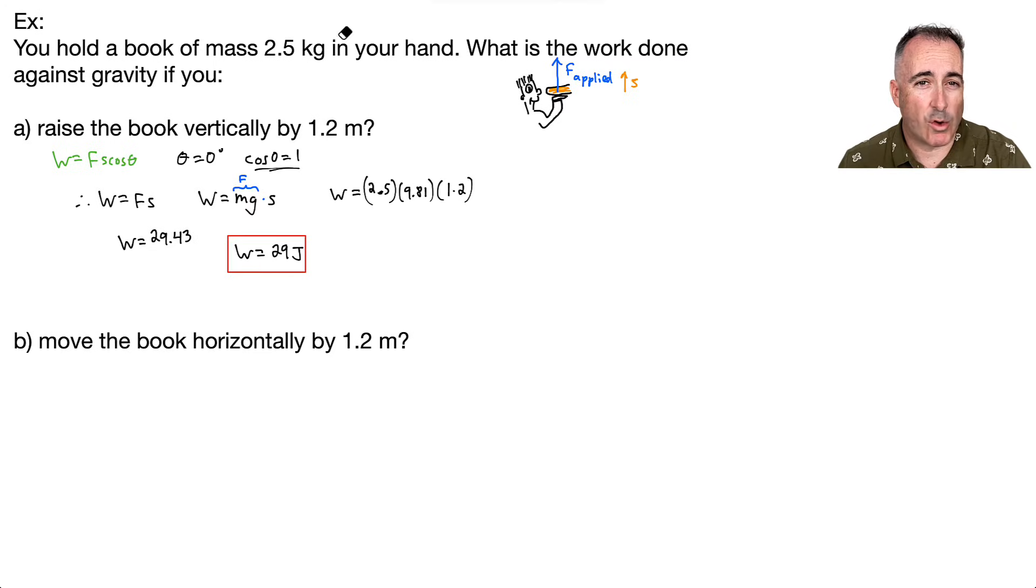What about the book moving horizontally? Your applied force is still upwards to keep it from dropping. However, your displacement is to the right. That means theta is going to be equal to 90 degrees, and cosine of 90 degrees is zero. Zero times anything gives you zero. In this case, you've done zero joules of work.